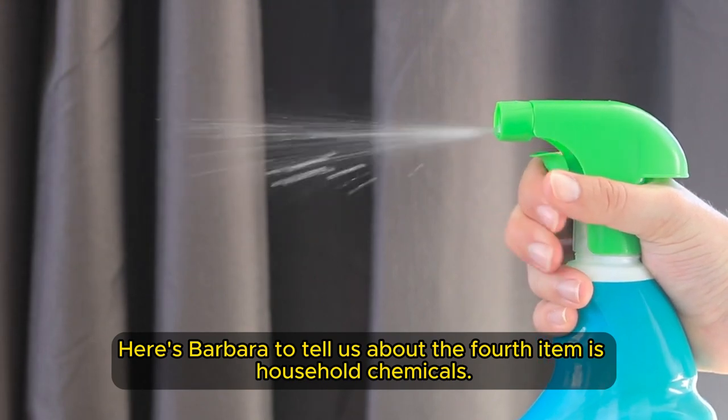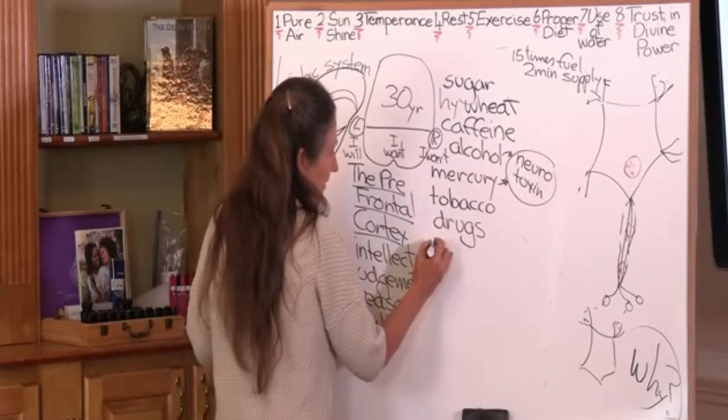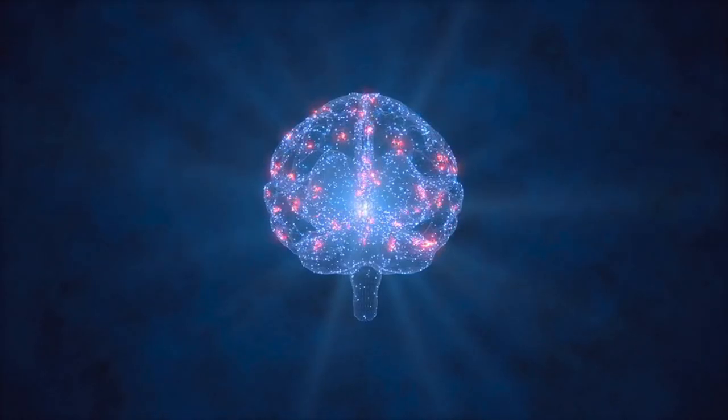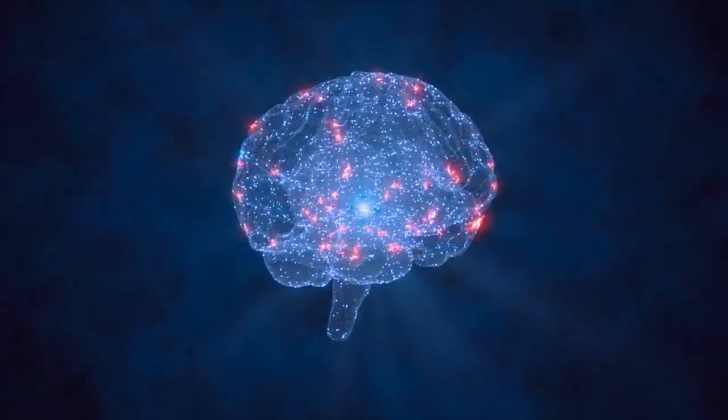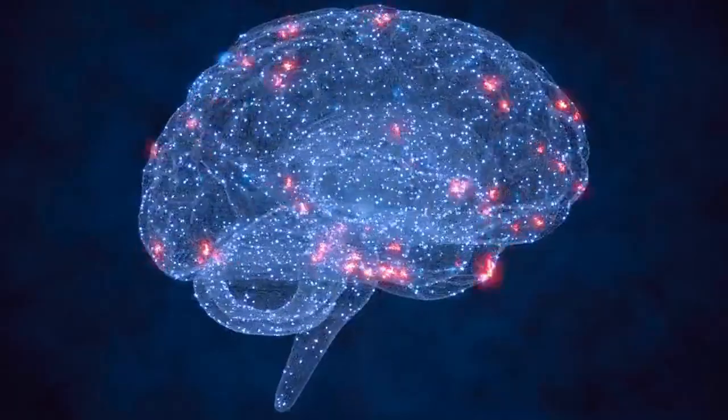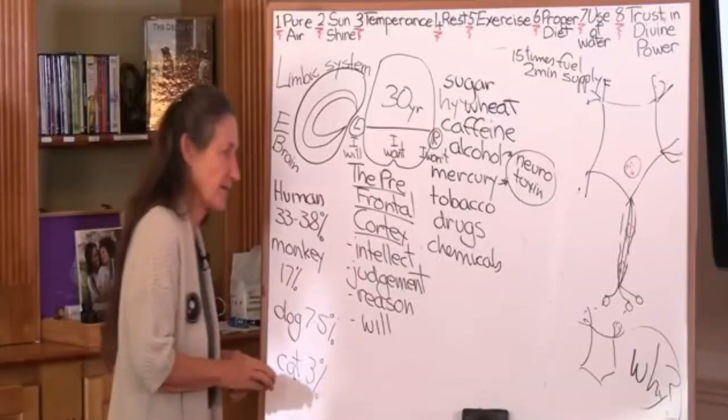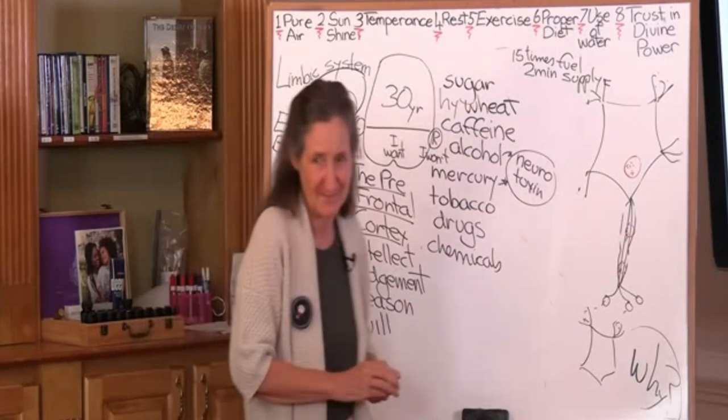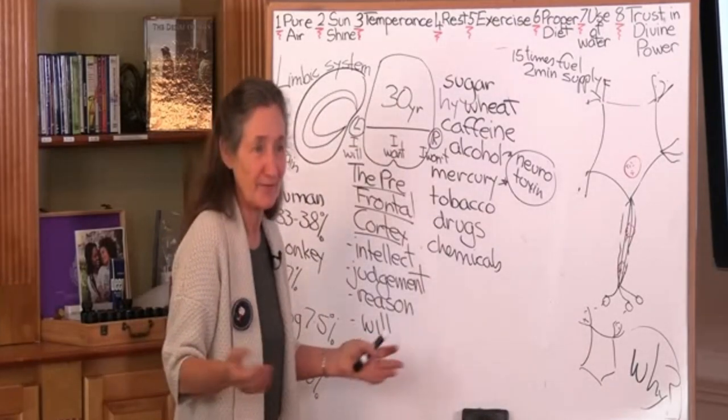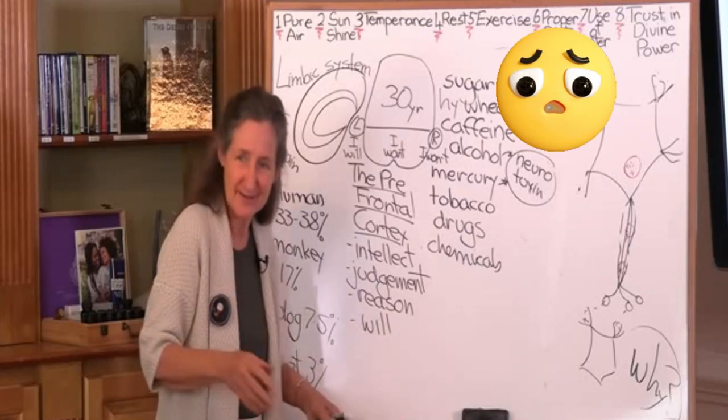Household chemicals. Chemicals damage the tissues, damage the myelin sheath, contributing to multiple sclerosis. We talked about getting them out of the house, out of your bathroom cupboard, out of your toothpaste, out of your clothes.